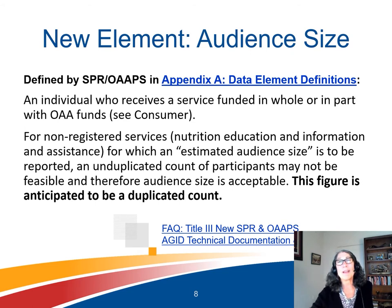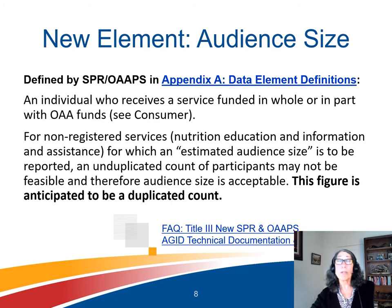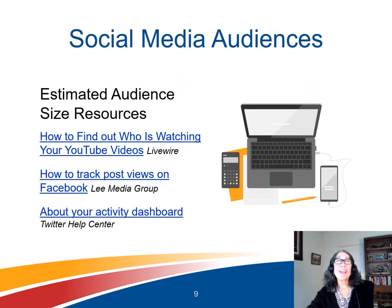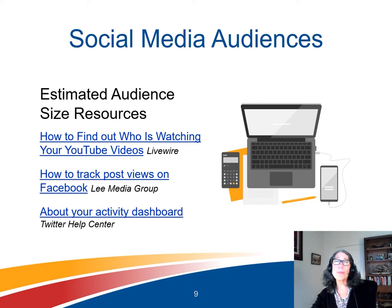The third area to highlight is estimated audience size, a new element to be reported for nutrition education found in SPR OAPS Appendix A. For non-registered services, which includes nutrition education and information and assistance, an estimated audience size is to be reported. An unduplicated count of participants may not be feasible, and therefore estimated audience size is acceptable — this figure is anticipated to be a duplicate count. Your state may require unduplicated counts, and therefore that is what would be reported. When it comes to social media, it's possible to determine estimated audience and even audience demographics through resources from YouTube, Facebook, and Twitter.